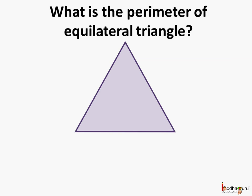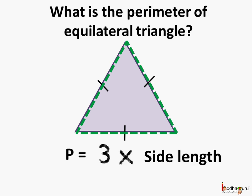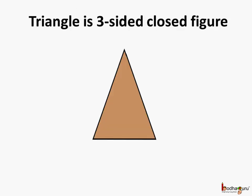What is the perimeter of an equilateral triangle? We know the perimeter of any closed figure is the boundary enclosed by the figure. Here it is shown by the green dotted line. In case of an equilateral triangle, all the sides have equal lengths. An equilateral triangle has 3 sides which are of equal length. So the perimeter here is equal to 3 times the length of a side. We also know a triangle is a 3-sided closed figure — it is a polygon where each line segment intersects exactly 2 other line segments.